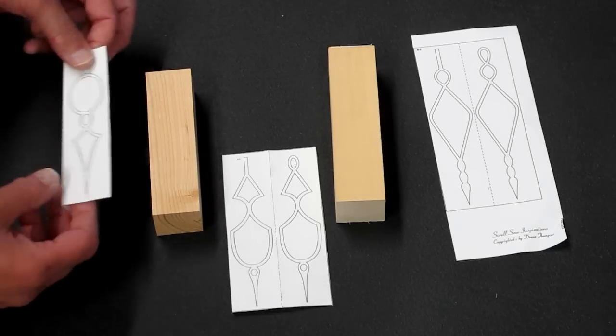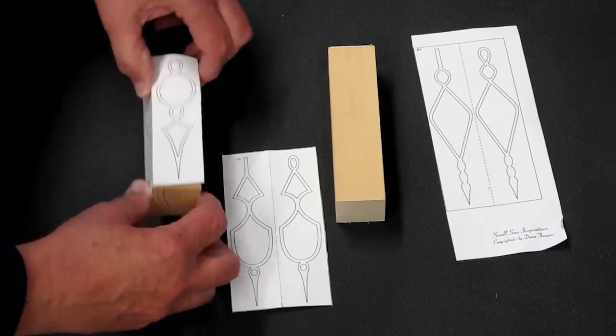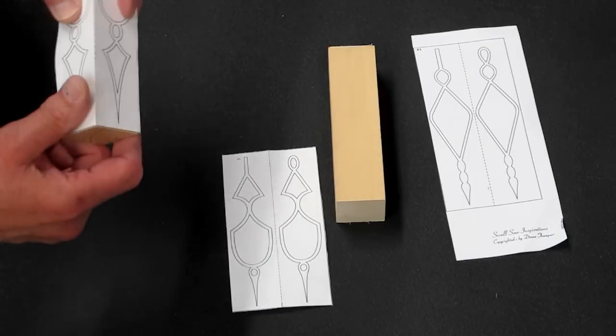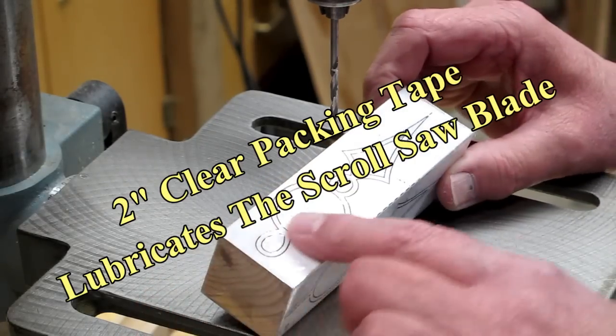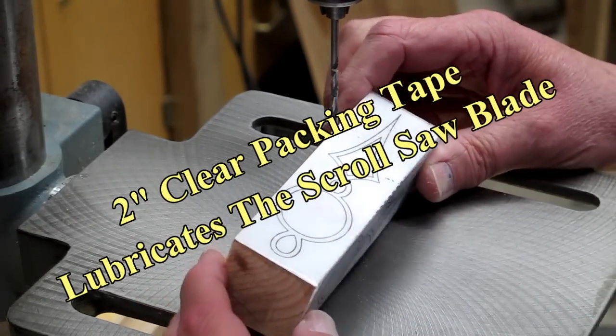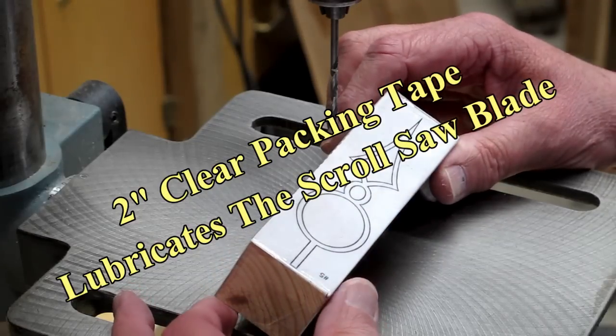Spray your pattern with adhesive. Line that up on that block and push it down tight. The pattern has been glued to the blank. We've wrapped it with a couple layers of packing tape to lubricate the saw blade.